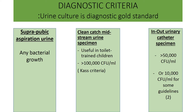In that population of children, one would do a suprapubic aspiration of urine from the bladder. Using that method, any growth from that specimen would be considered diagnostic of a urinary tract infection, because the bladder is sterile. So any growth of urine would be considered as diagnostic of a urinary tract infection.